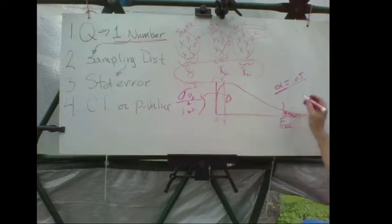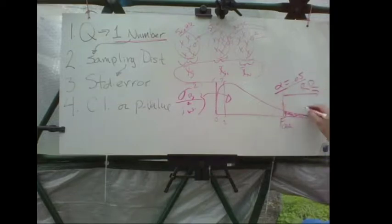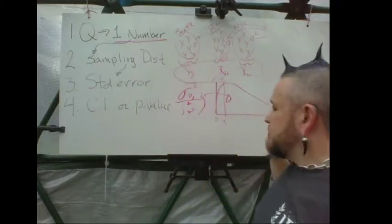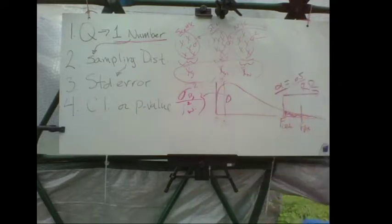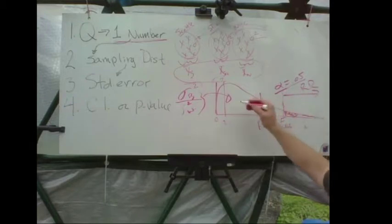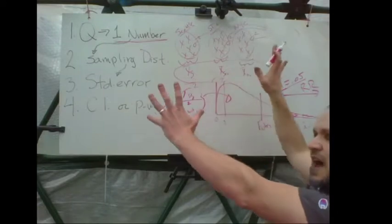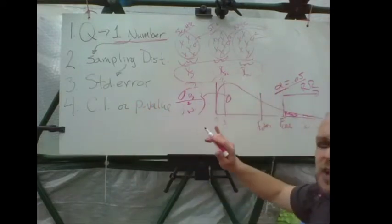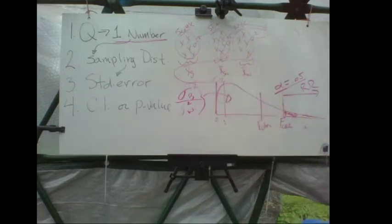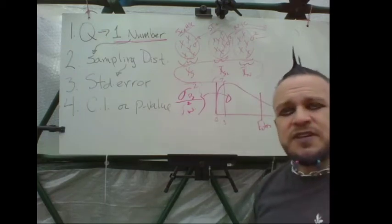You calculate F-observed, and if it falls in the rejection region beyond F-critical, you reject the null hypothesis — the null being there is no difference between the groups in the population. If F-observed falls below F-critical, you don't reject the null and conclude there's no evidence that professors who went to Seattle, St. Louis, or New York City had different average temperatures.